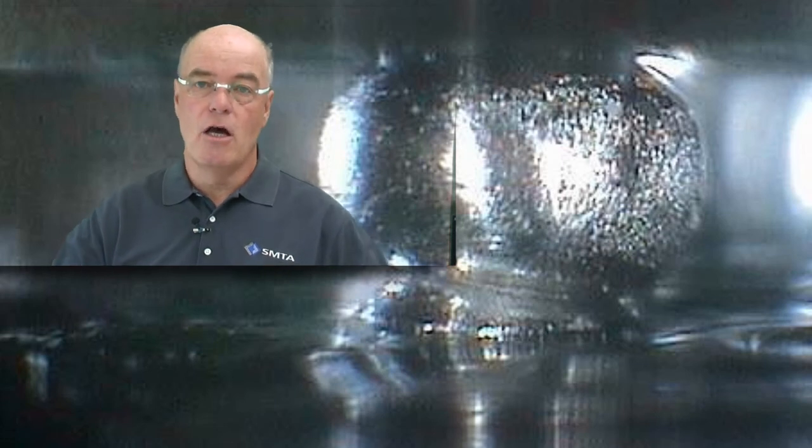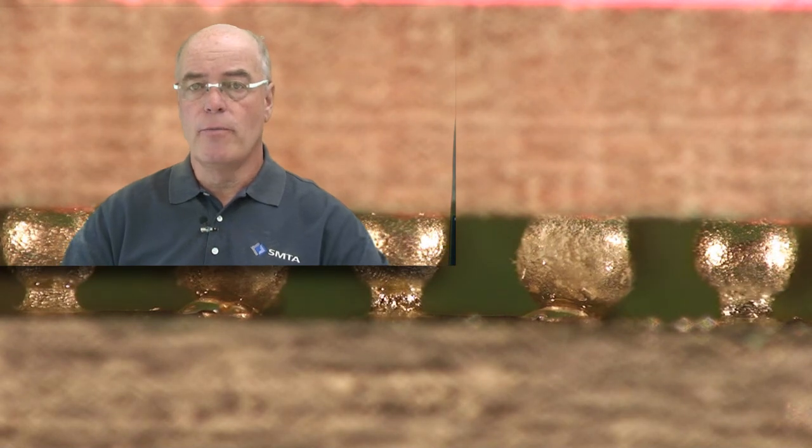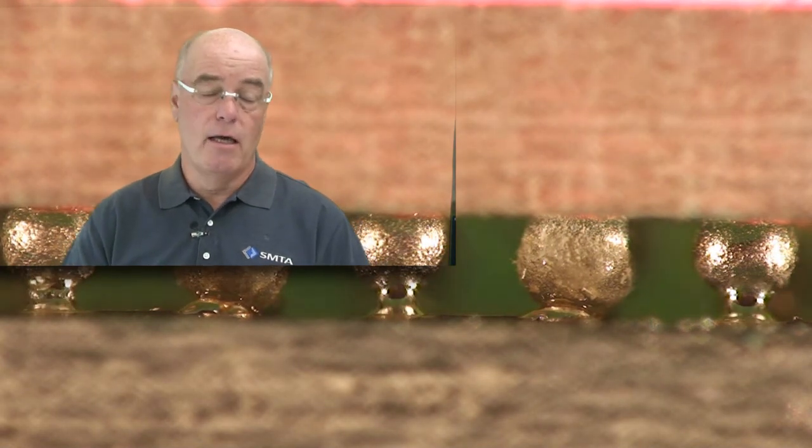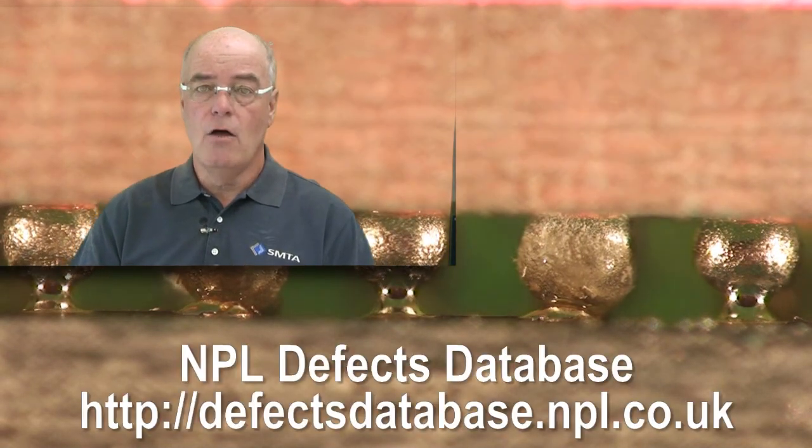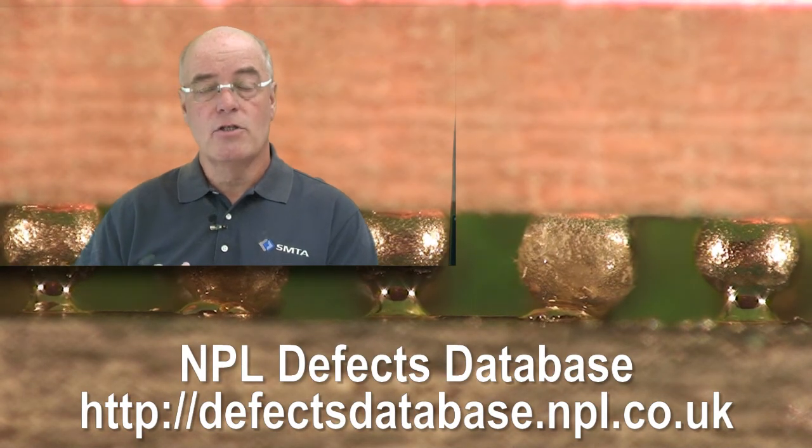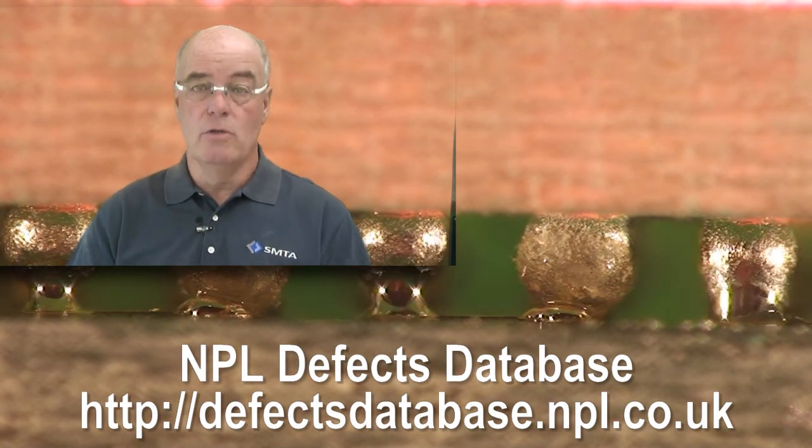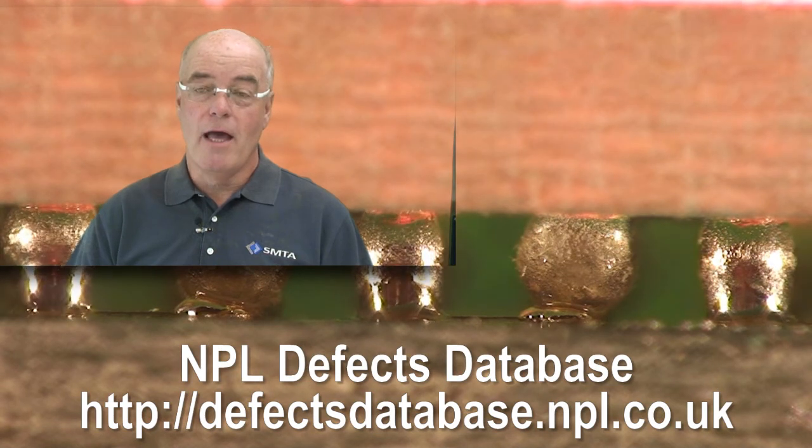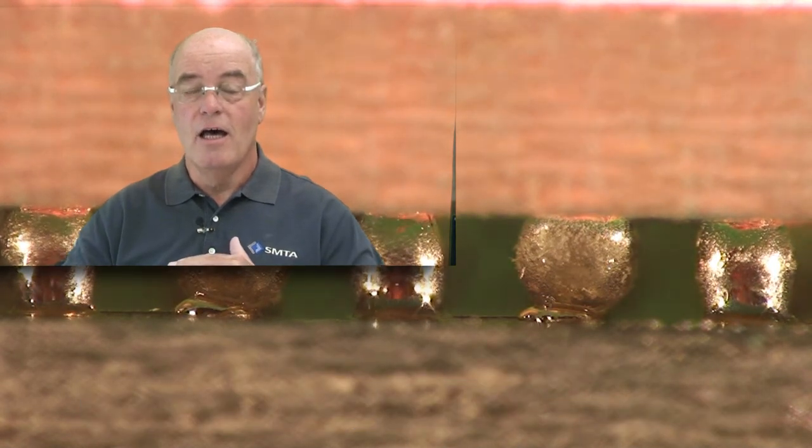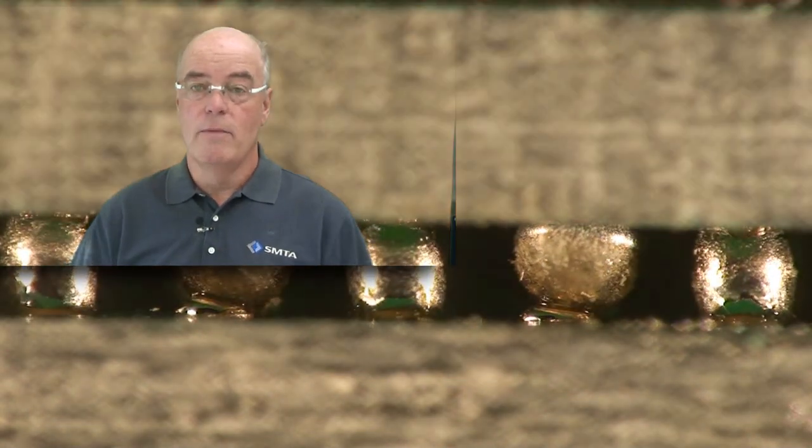If when the package starts to straighten out and sits back onto the solder which has reflowed on the pad, if there is no flux present, then it can't remove the oxide. Hence, the solder tends to sit down into the solder on the pad and leave a weak or intermittent joint.